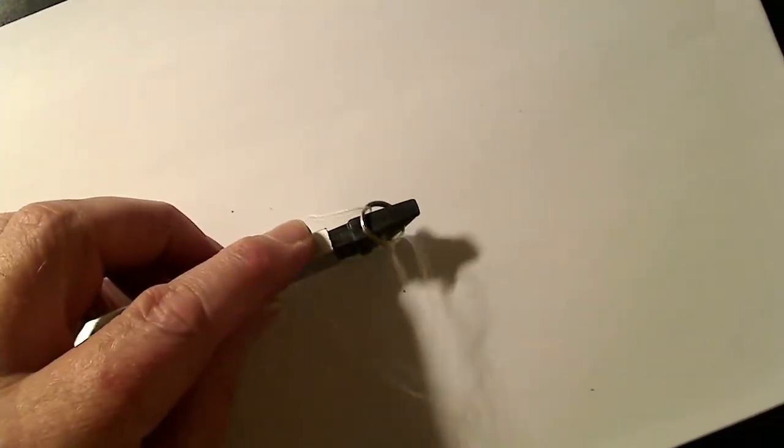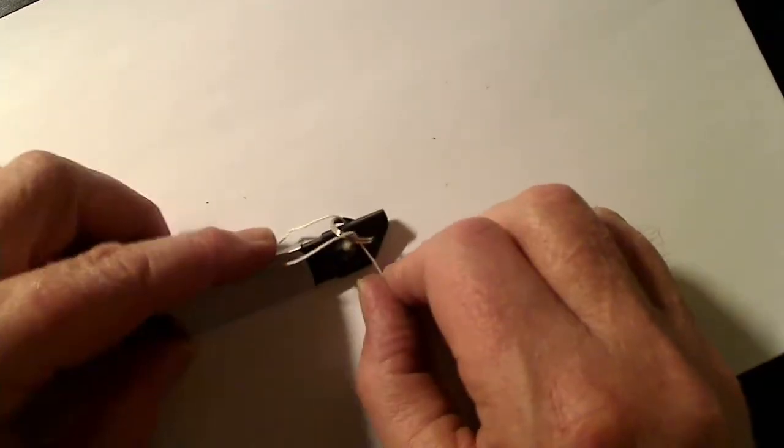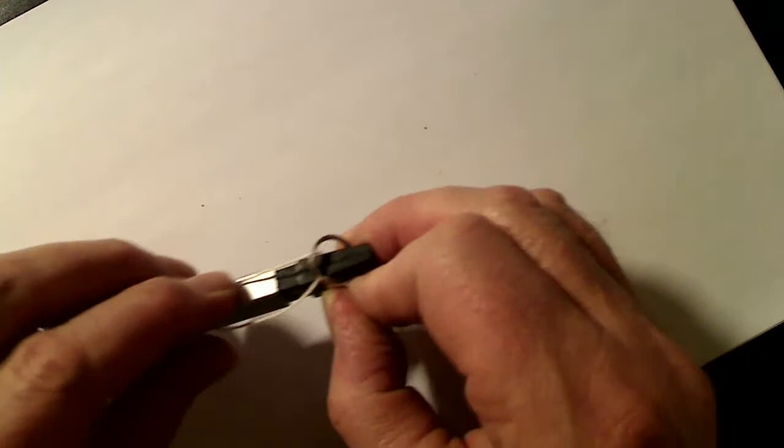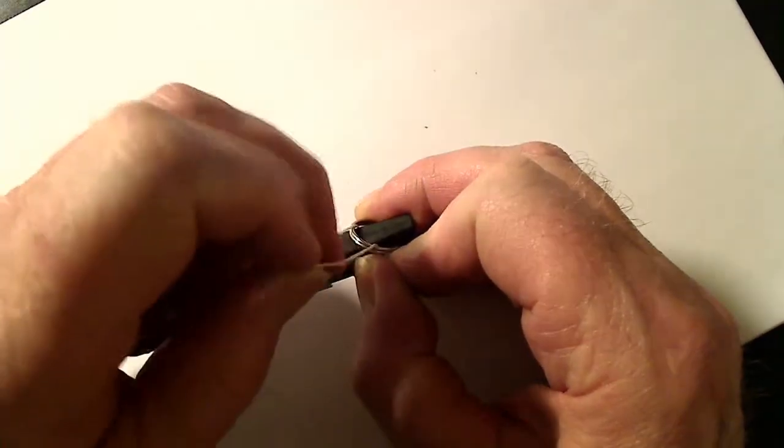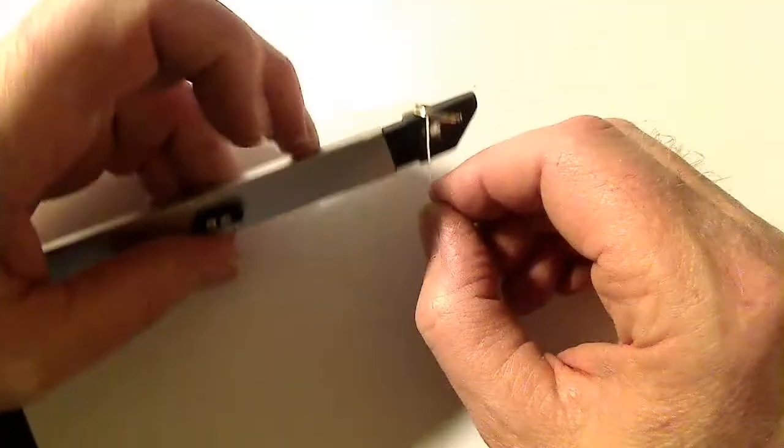So once we get it threaded through, we pull that through, and there you see that line will go through the clue eyelet where my left finger is there.